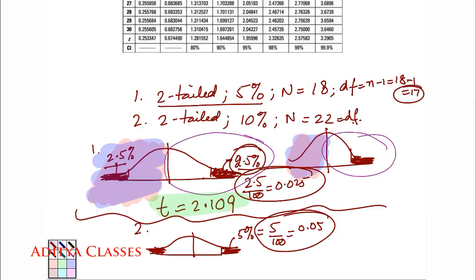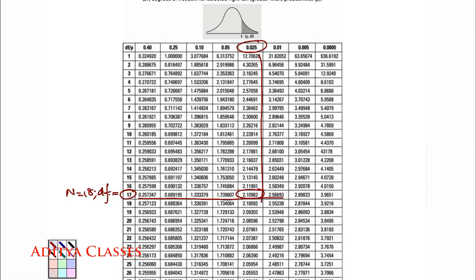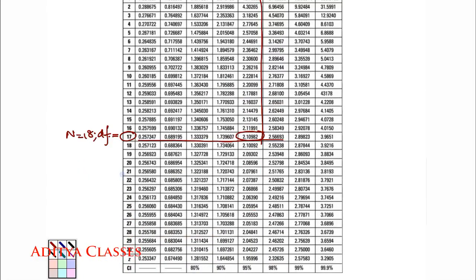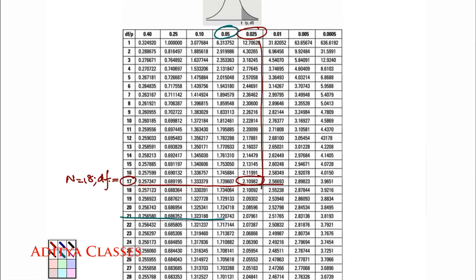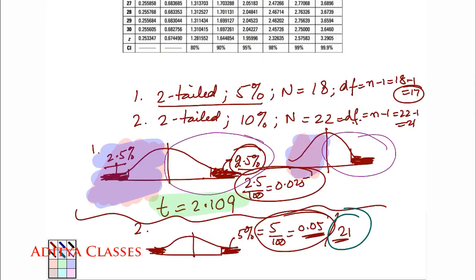So, 2-tailed 10% has reduced to 0.05. N is equal to 22 will give me degrees of freedom. How much? N minus 1. N minus 1 that is 22 minus 1 that is 21. So, I need to check it at 21. 0.05 with degrees of freedom, 21. Here we have 0.05 with degrees of freedom, 21. This value, 1.72. T is equal to 1.72.